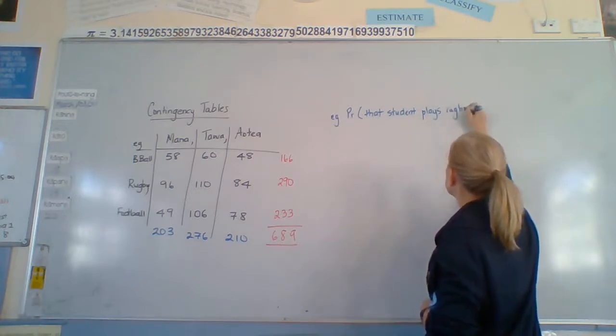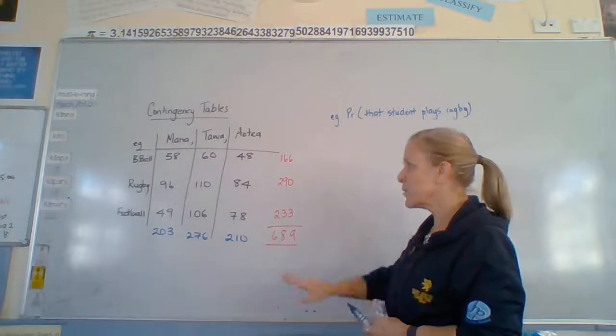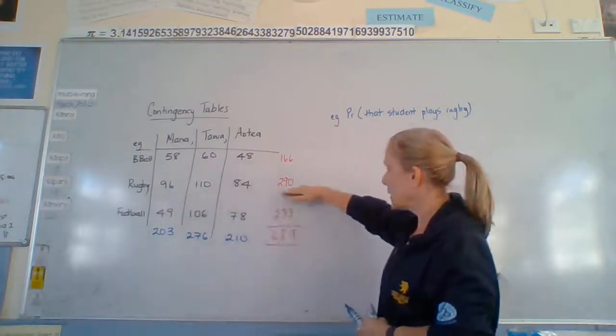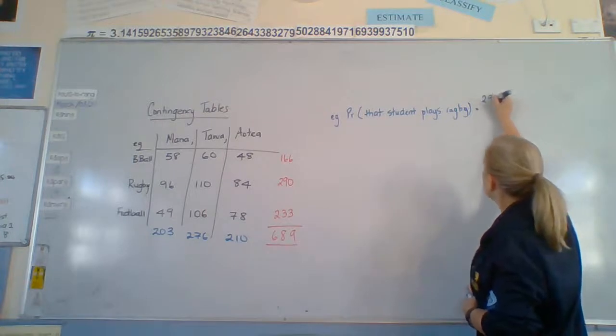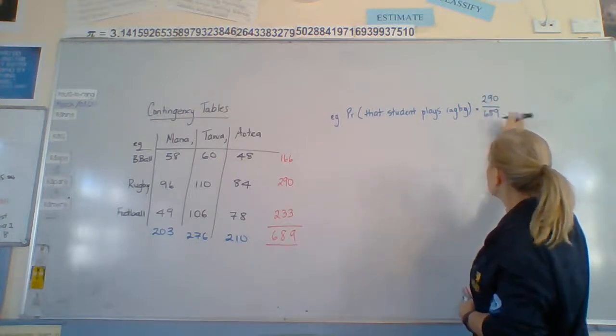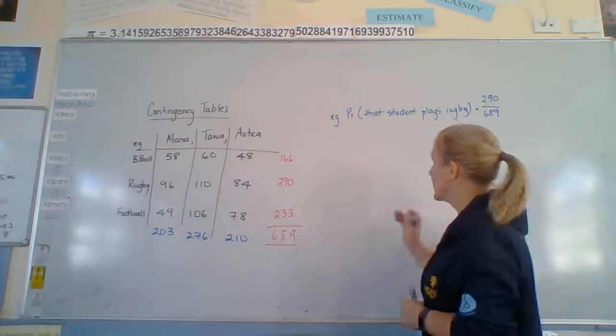Alright, so there's no mention of schools here. We don't have to worry about the schools. We're just interested in rugby out of all the students. So our answer is going to be 290 over 689. No trying to simplify, just leave it like that.